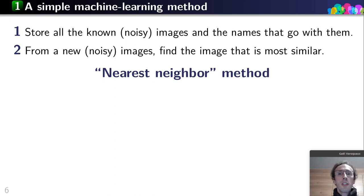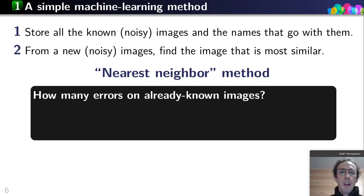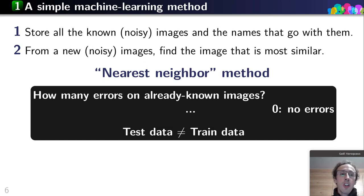Let me introduce a few concepts starting with a very simple machine learning method. Going back to our problem of teaching the computer to recognize names from images, I can store all the known noisy images and their associated names in a database. Given a new noisy image, I can just look for the most similar one. This is known as the nearest neighbor method, and it's a real method in machine learning.